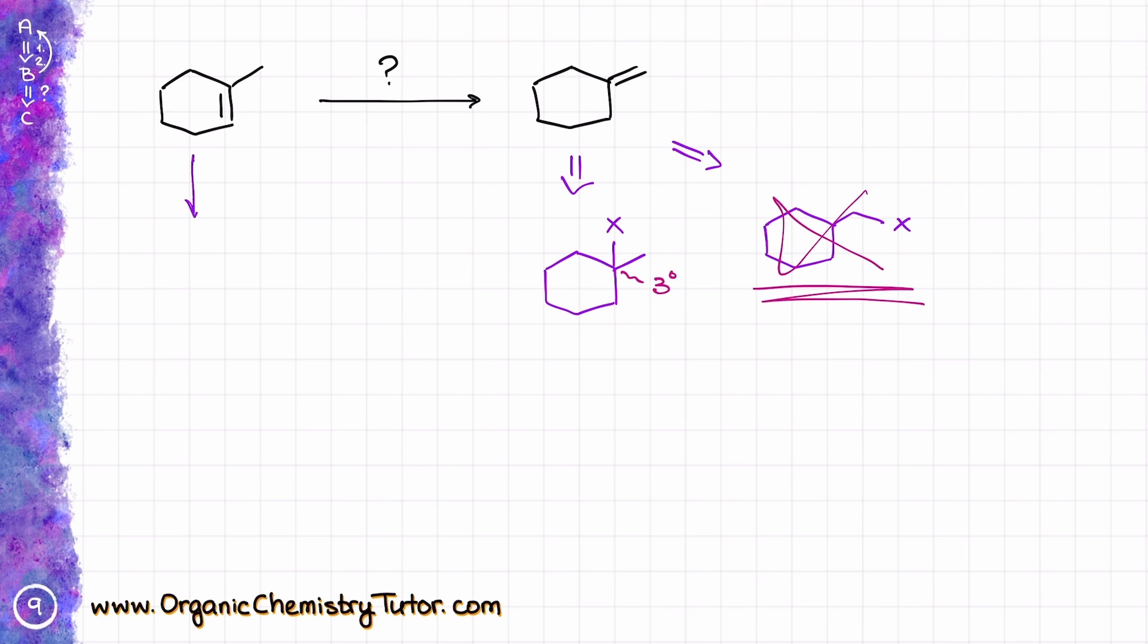which means that if I start from here, I react that with HX, I am going to end up, per Markovnikov's rule, if you want to think about it this way, with a molecule that looks like that, which is exactly the same molecule as I have as a predecessor for my double bond.